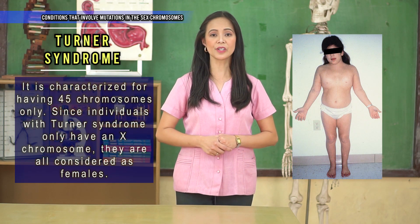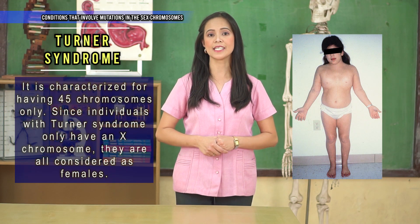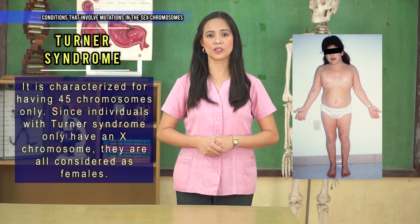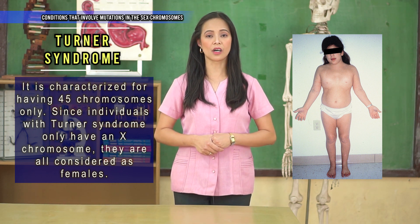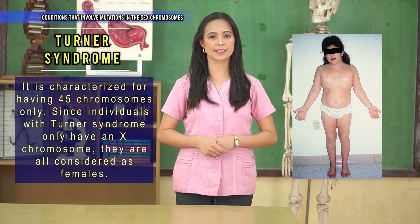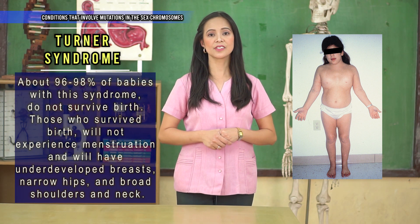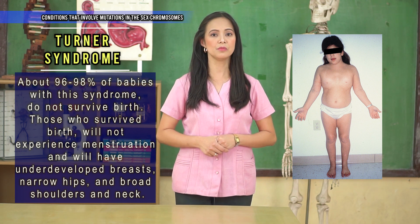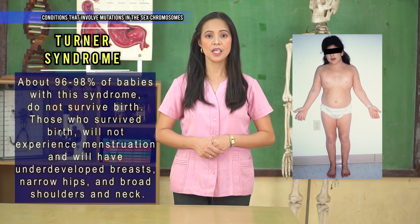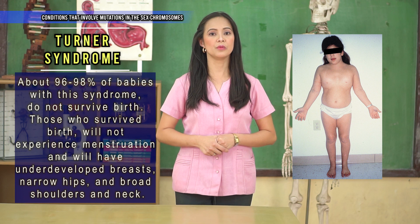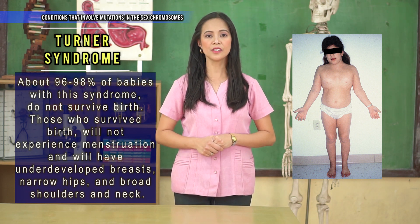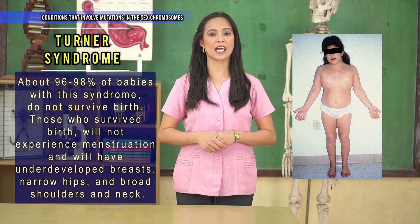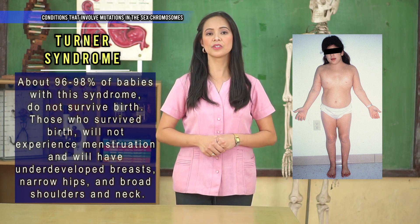Meanwhile, Turner syndrome is characterized by having only 45 chromosomes. Since individuals with Turner syndrome have only one X chromosome, they are all considered females. About 96 to 98% of babies with this syndrome do not survive birth. Those who survive will not experience menstruation and will have underdeveloped breasts, narrow hips, and broad shoulders and neck.